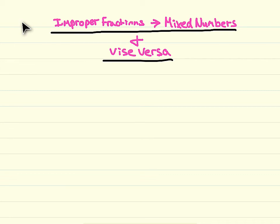This video will help you learn how to turn improper fractions into mixed numbers and vice versa. For example, sometimes your answer will be an improper fraction such as 7 over 4.